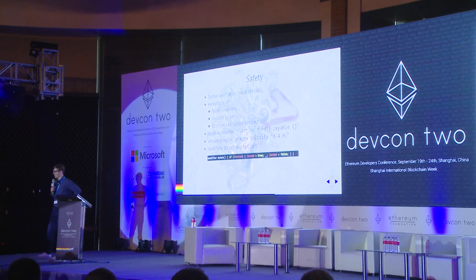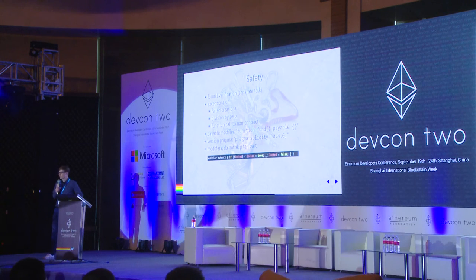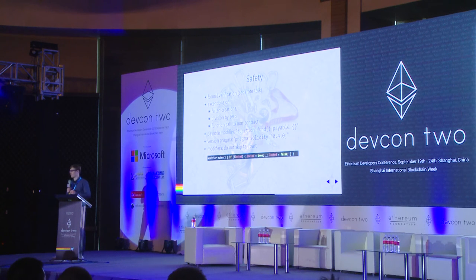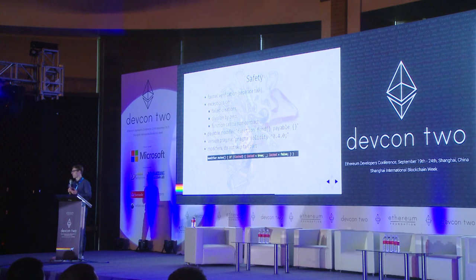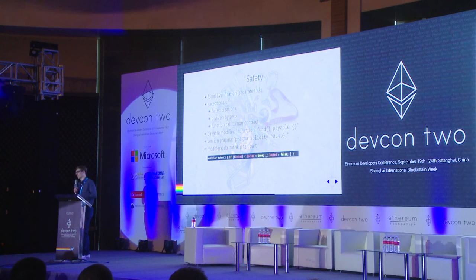To make the version transition safer, we also added the version pragma, which means you can now specify the compiler version your source code is designed to work with. If we change the language in the future, this version pragma will tell the developer that there might be some changes, so they probably have to take a look at the source code and modify it accordingly.